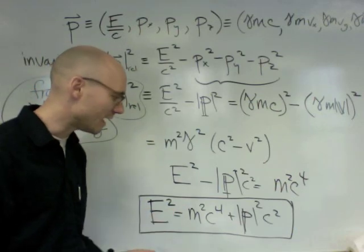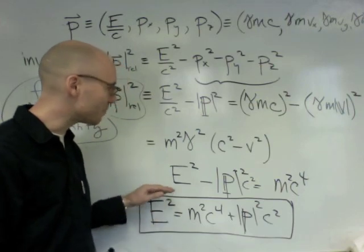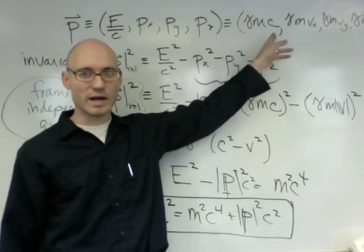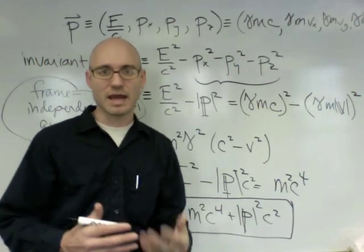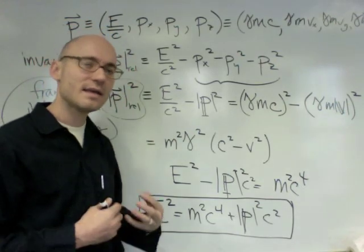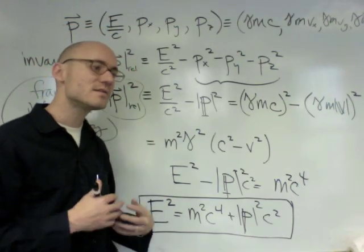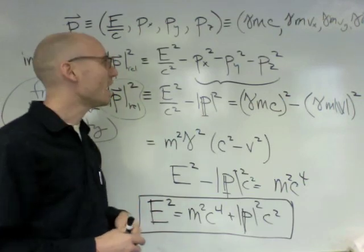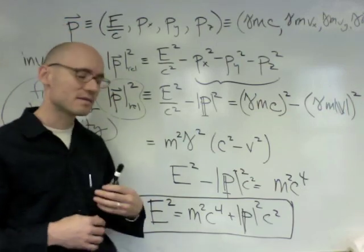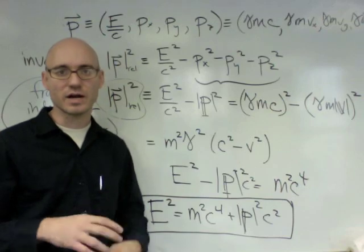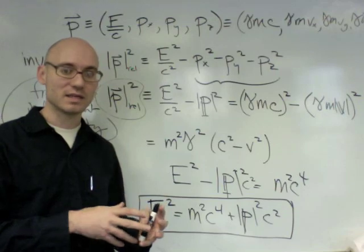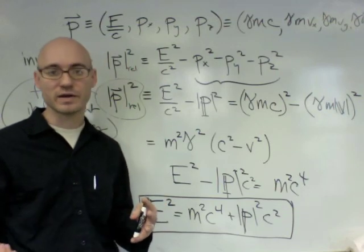And as we saw last class, I showed that this expression for energy we've been using, that it's gamma mc squared, this expression that the energy is gamma mc squared, is an assumption, is consistent with our expression one half mv squared. Because at low speeds,